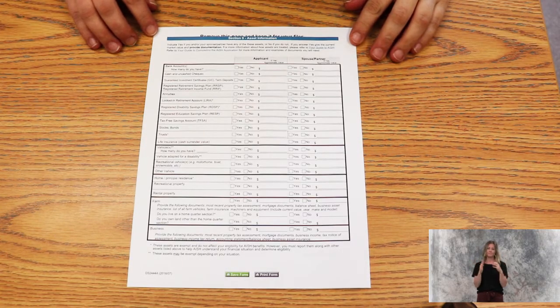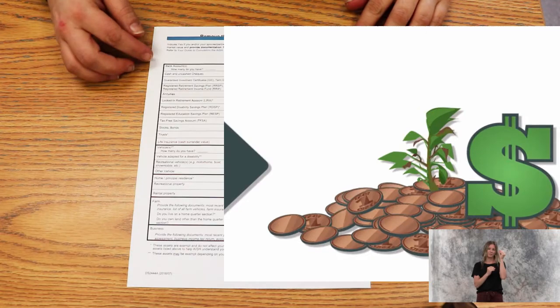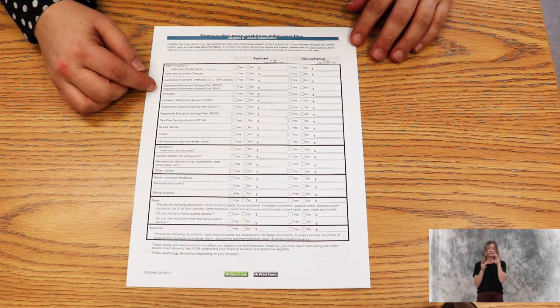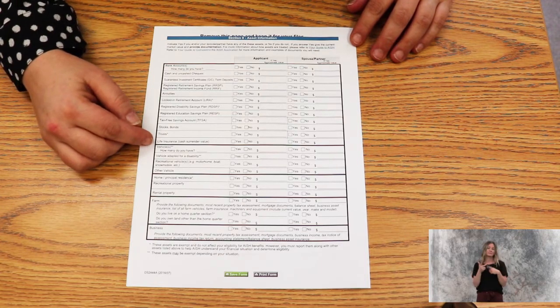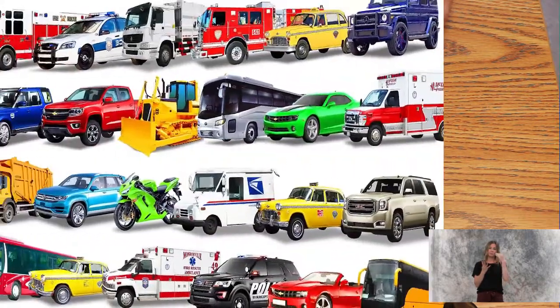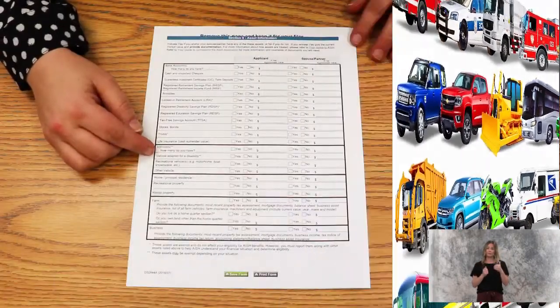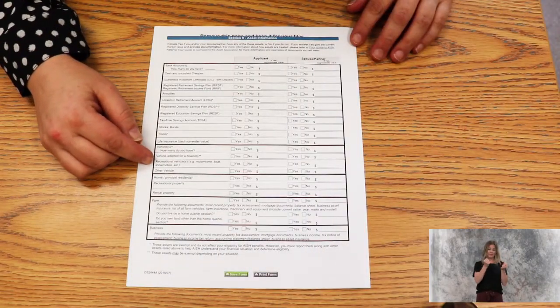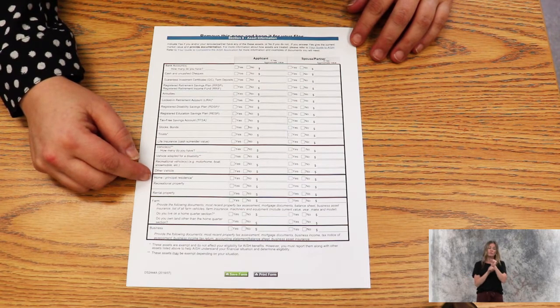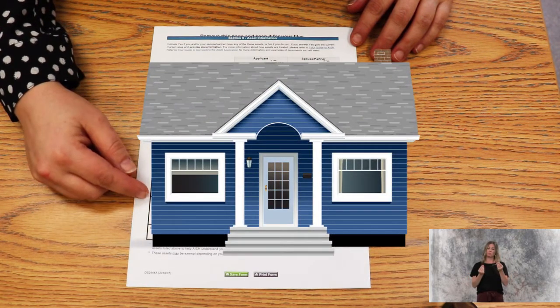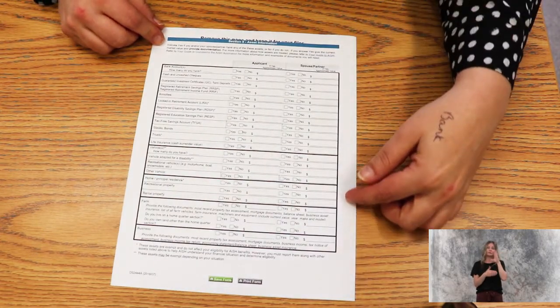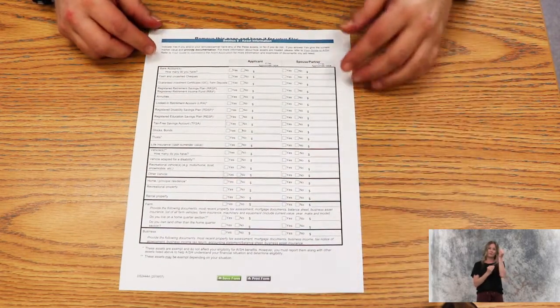Section nine is the asset information. You need to know how many bank accounts you have, any information about any investments, and life insurance. We also need to know about how many vehicles you have, whether it's adapted for a disability, whether you have a recreational vehicle, what is your home situation, recreational property, rental property, farm and business. That includes spouses—we need to have all that information for your spouse as well as yourself.